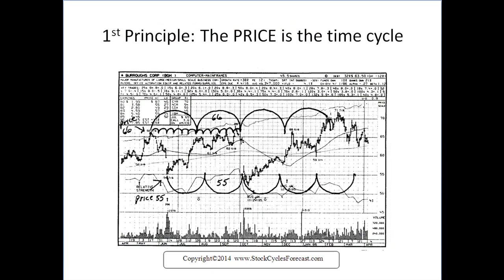This gets us to our very first principle: that price at the final highs and lows is the time cycle. We see here on this chart of Burroughs Corp. that a price high of 66 will spin out time units of 66. These little ones here are every 66 hours. The bigger ones are 66 days, and here's the top.